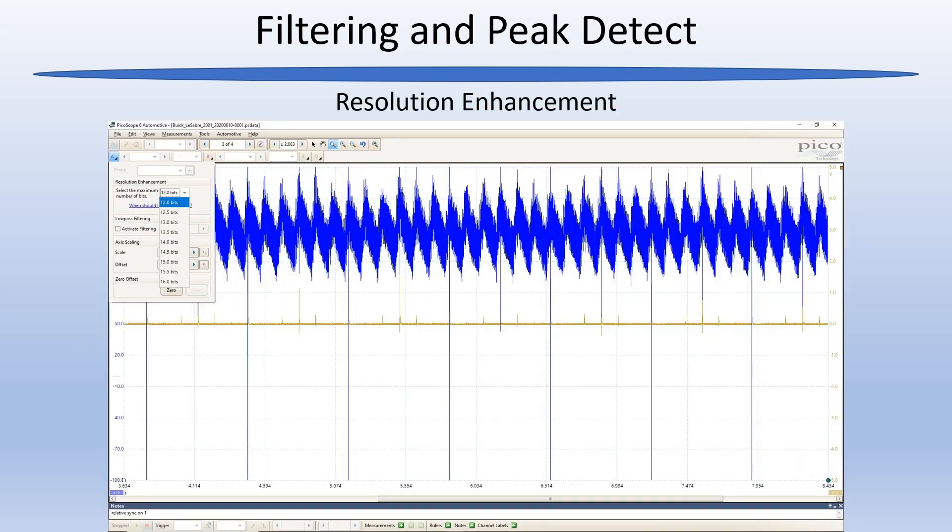I want to briefly talk about another feature on the Pico called resolution enhancement. Resolution enhancement uses software to estimate a capture if it were captured on a scope that is a higher bit rate than the one you are actually using. So if using a 12-bit scope, you can select up to 16-bit enhancement. While this feature is not specifically designed to filter anything, it does have a side effect of filtering your capture.